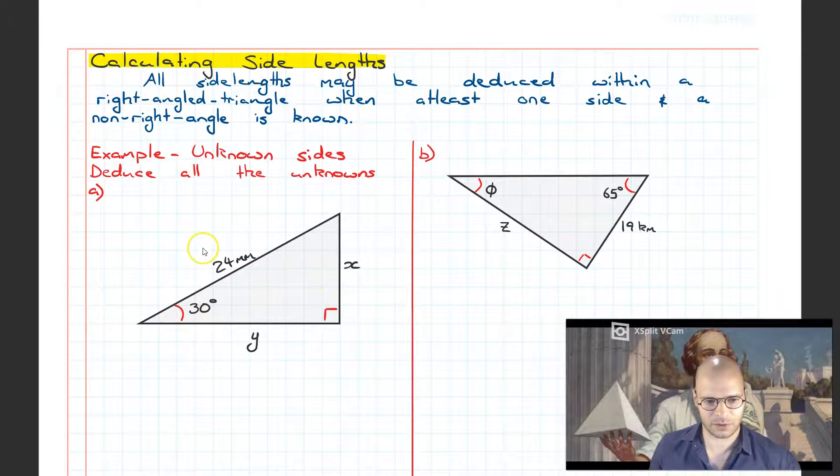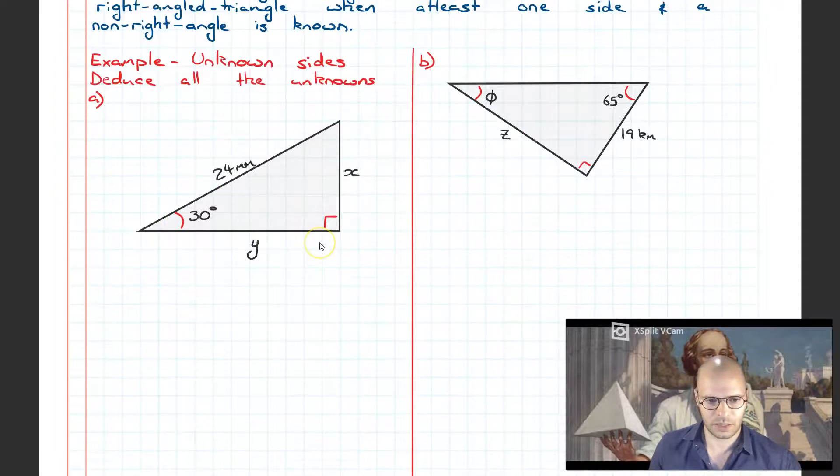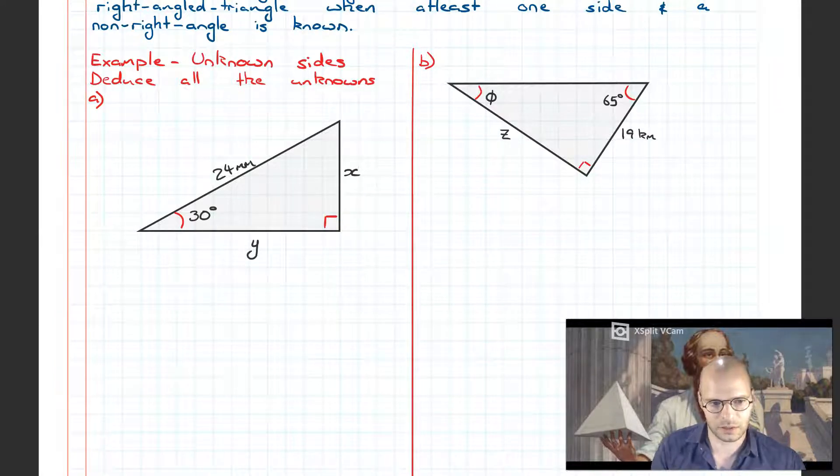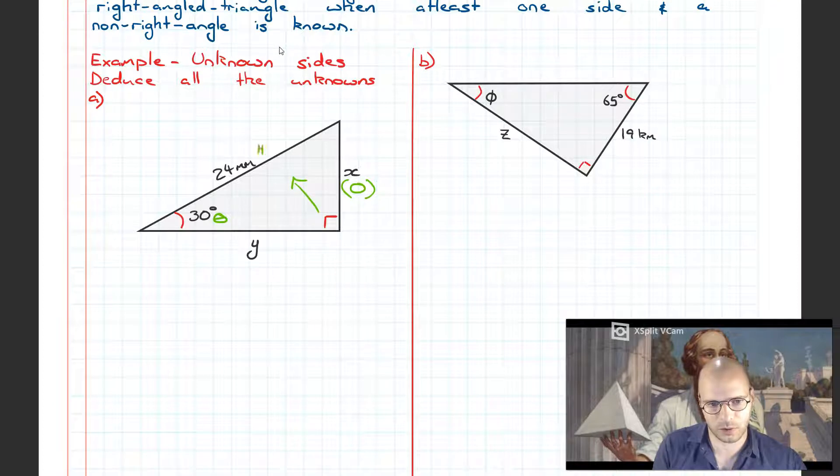Over here we have a right angle triangle. We have an angle of interest and we have a given side length. The other two side lengths are unknown. What we're going to do to compute the values of X and Y is first start off by labeling this triangle in the convention we looked at in the previous lesson. We identify our angle of interest and call it theta. Opposite theta, we have our opposite side. Then identifying the right angle, we go opposite the right angle and this is our hypotenuse. Finally, the leftover side is the adjacent side.